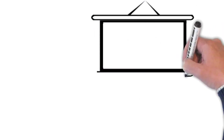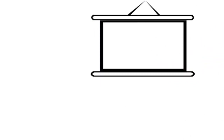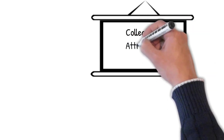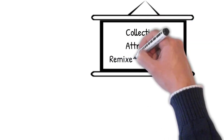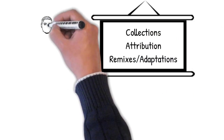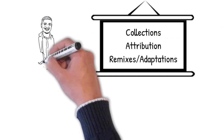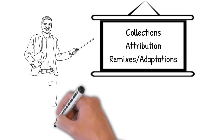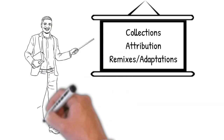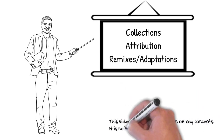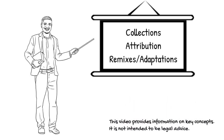If you want to work with Creative Commons licensed work for training or education, this video will explain how to collect Creative Commons works, how to properly cite them, and what to do if you want to alter a Creative Commons work and how to properly cite that alteration. This video sets you up for the next, which reviews the creation of open educational resources using open access materials which have Creative Commons licenses.